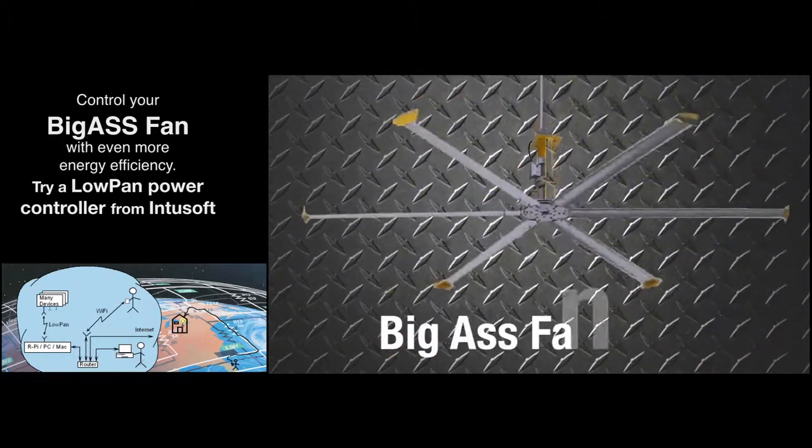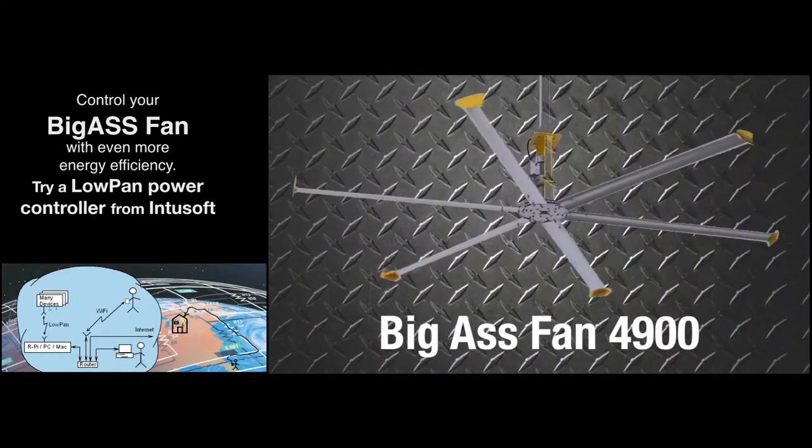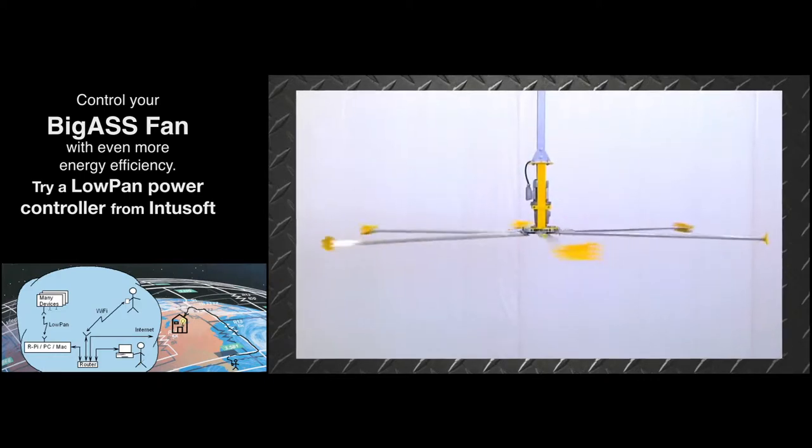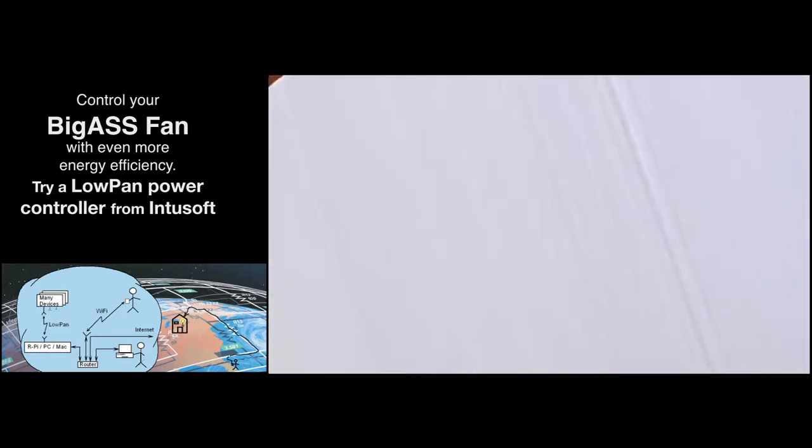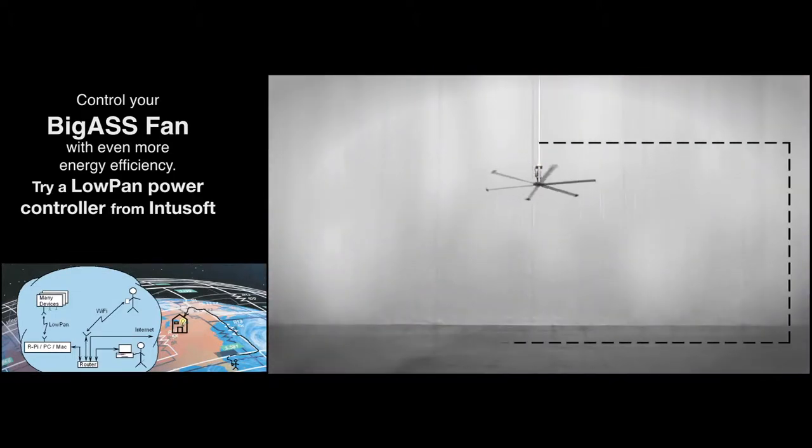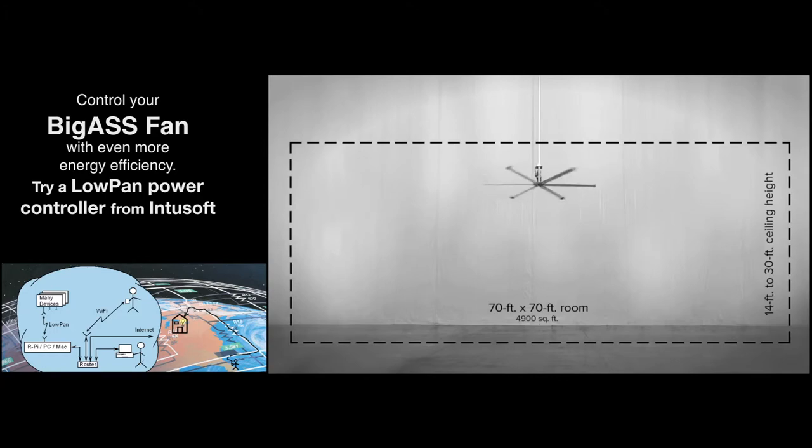Last but not least, the Big Ass Fan 4900. Its 14-foot diameter fills the largest spaces. This powerhouse moves more air than 34 standard ceiling fans at a fraction of the cost. Use it for rooms 70 feet by 70 feet with ceiling heights from 14 feet to 30 feet.